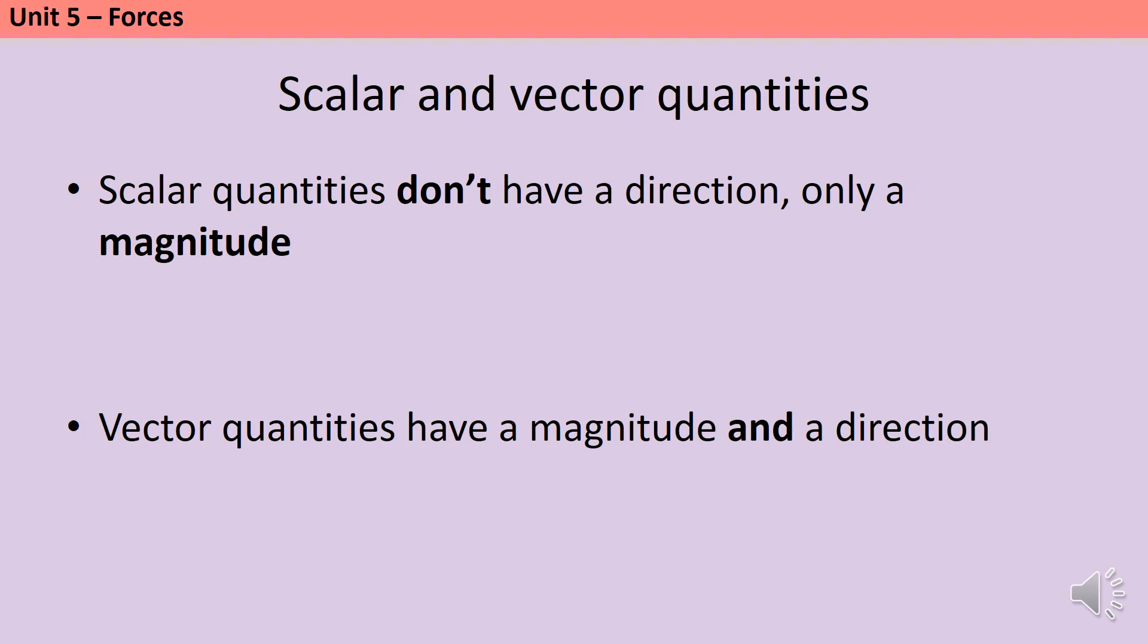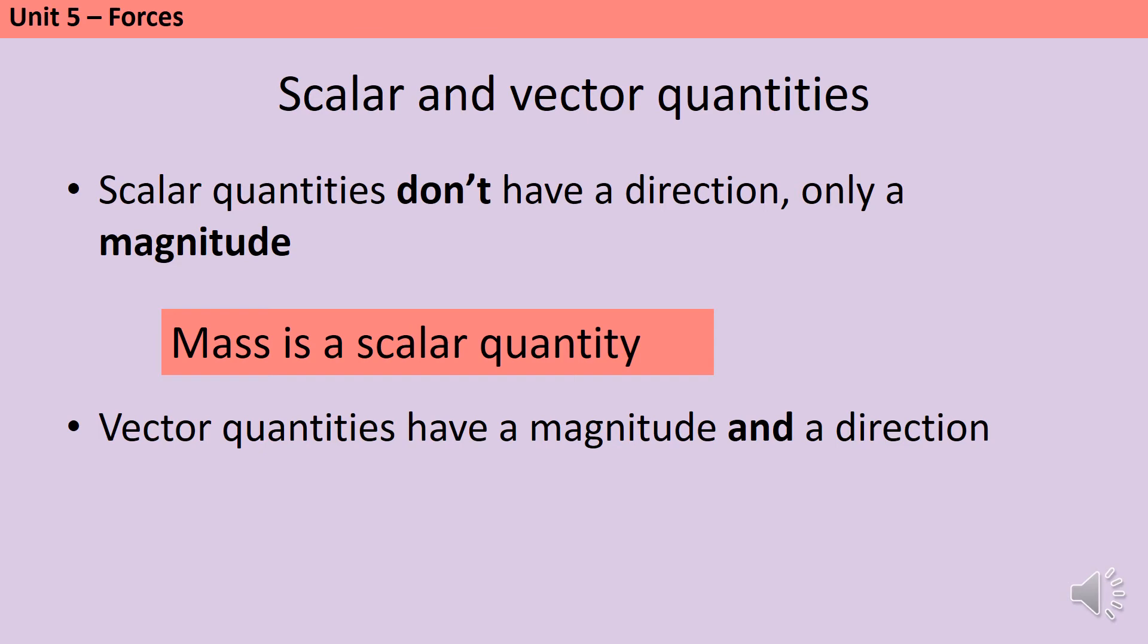Throughout GCSE Physics, we need to be able to identify whether quantities are scalars or vectors. Scalar quantities don't have a direction. They only have a magnitude or a size. So, mass is an example of a scalar quantity. Vector quantities still have a magnitude, but they also have a direction. Your weight is a force pulling you down towards the Earth, so it does have a direction, and therefore weight is a vector quantity.